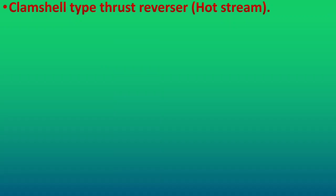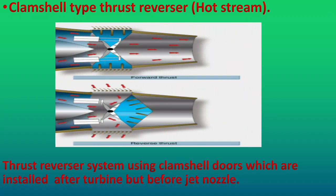The second type is the clamshell type thrust reversal, also called the hot stream type thrust reversal. Hot stream thrust reversal is also known as mechanical blockage thrust reversal. Mechanical blockage is accomplished by placing a movable obstruction in the exhaust gas stream either before or after the exhaust exits the duct. As you can see in the first picture, a thrust reversal using clamshell doors is installed after the turbine but before the nozzle of the jet engine. The clamshell door system is a pneumatically operated system. On selection of reverse thrust, the doors rotate to uncover the duct and close the normal gas stream exit.